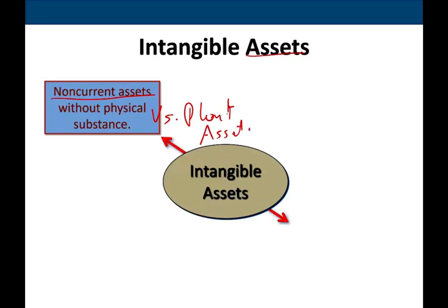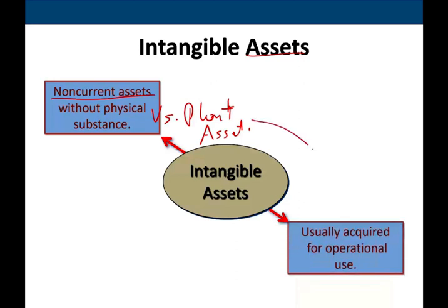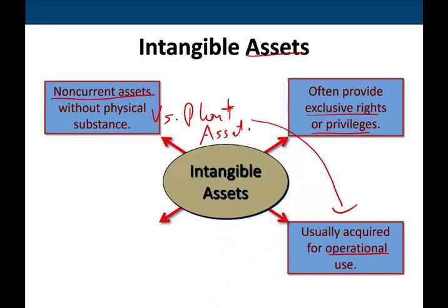We talked about plant assets like vehicles, office buildings, warehouses, and trucks. Just like plant assets, intangibles are usually acquired for operational purposes. So unless buying and selling patents is your job, generally speaking, when you obtain an intangible, it's for the purpose of operating your business. What they do is provide you with an exclusive right or privilege to conduct your business — maybe a secret formula or the right to operate in a certain geographical area.